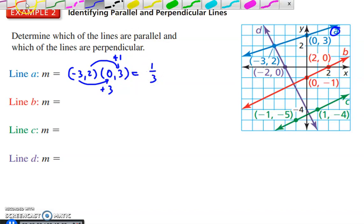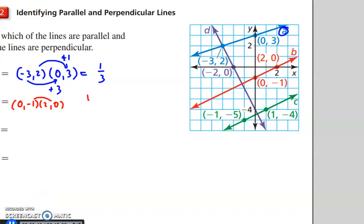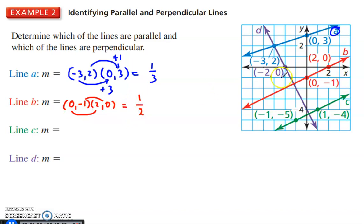All right. Then line B. Line B has two points, 0 and negative 1. 0, negative 1. And 2 and 0. 2 and 0. Change in y. From negative 1 to 0, we have to add 1. So that's 1 on top. So we've got 1 on top. That's the change in y. And then from 0 to 2, we have to add 2. So that slope is 1 half. So we know these two are not parallel.